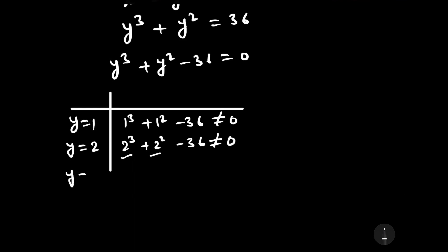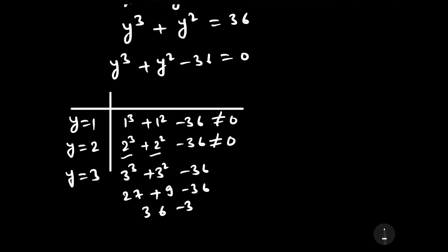Now let us put y equal to 3. Then 3 cubed plus 3 squared minus 36 equals 27 plus 9 minus 36, which equals 36 minus 36, and this is equal to 0. Therefore y equal to 3 is a root of this equation, and we can say that y minus 3 is a factor of this expression.